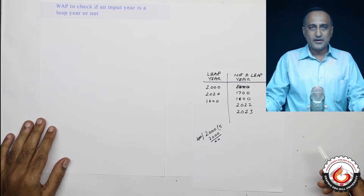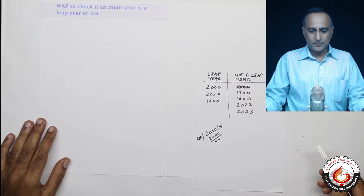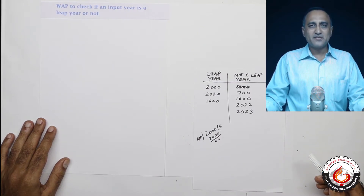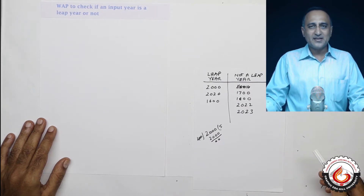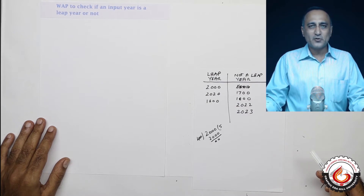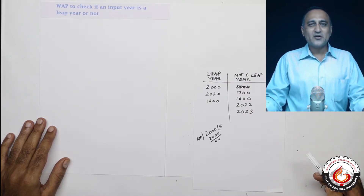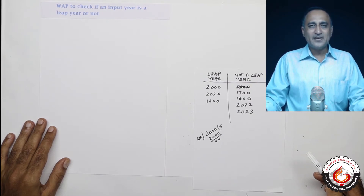Let us now try to develop a pseudocode to determine if a given input year is a leap year or not. Our general assumption is that any year divisible by 4 with a remainder of 0 is a leap year. That understanding is not really correct — the logic for the leap year is quite different in reality.